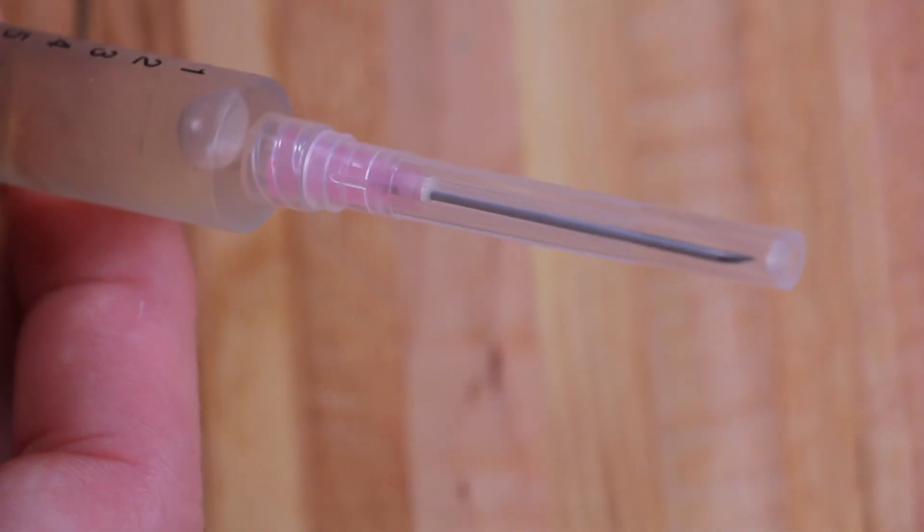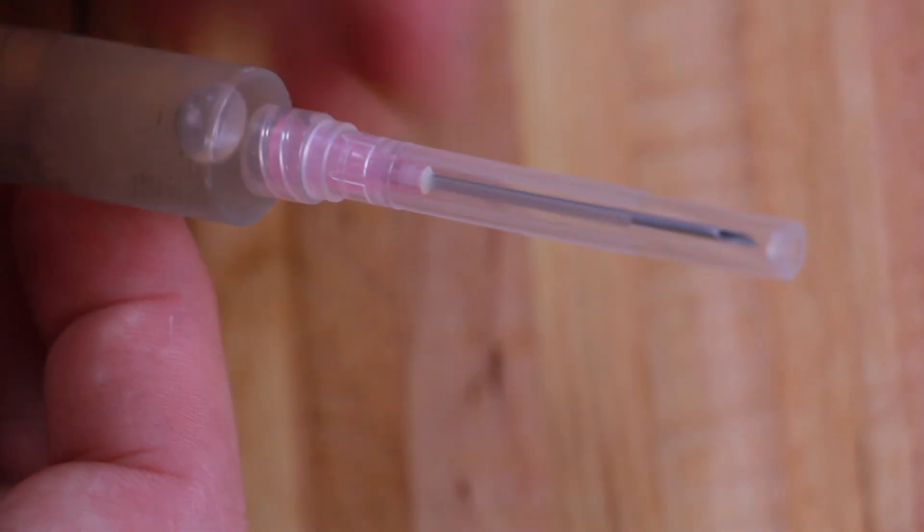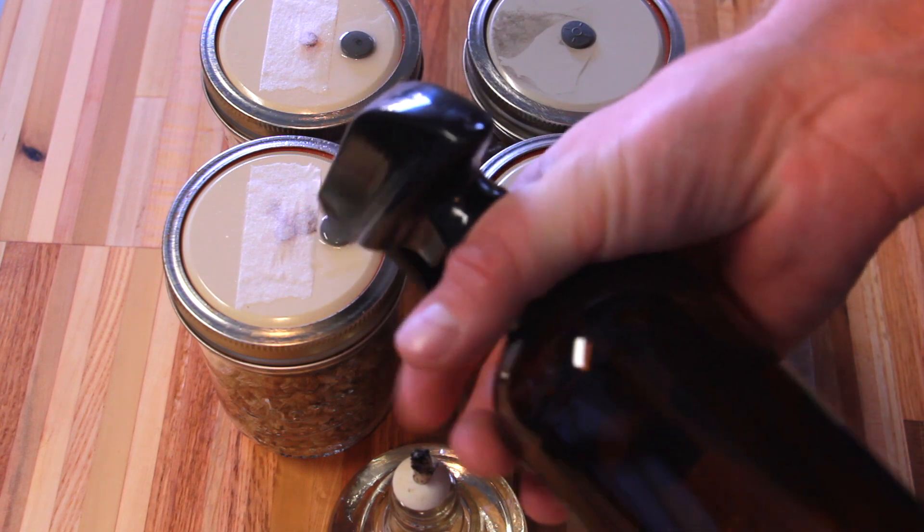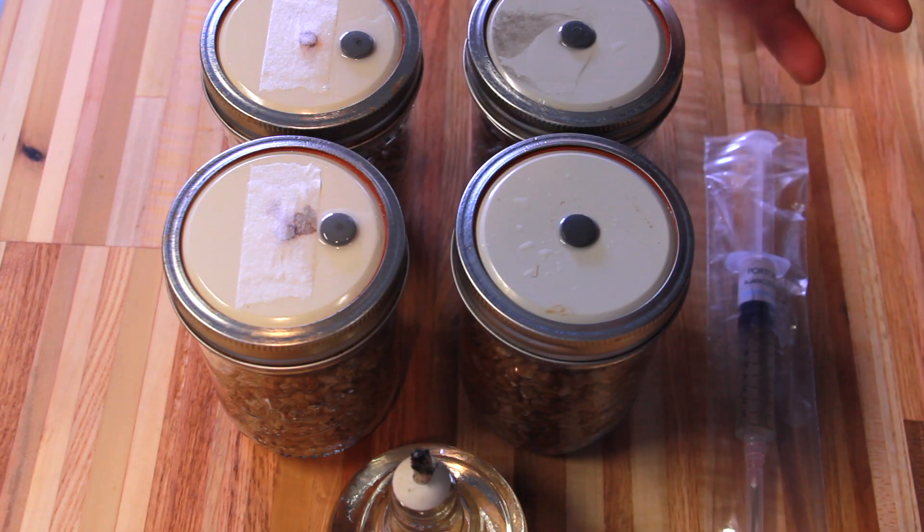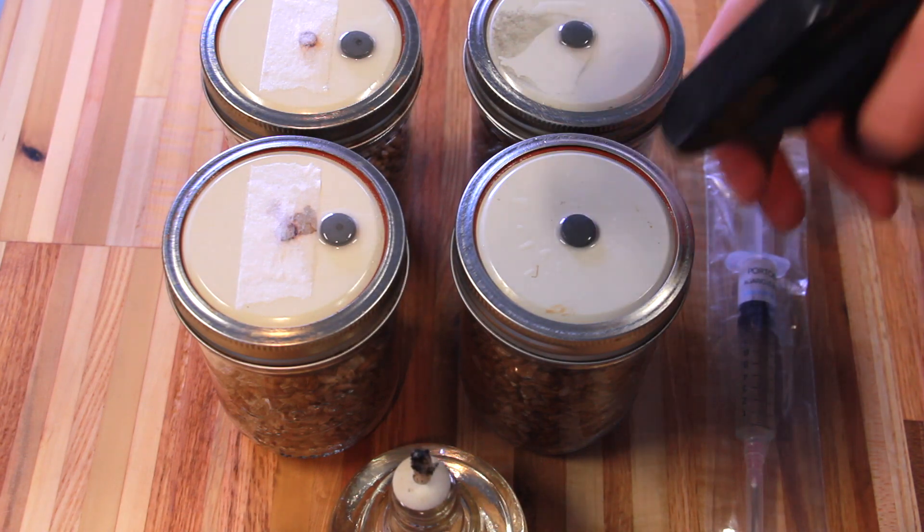I leave the cap installed until I'm ready to inoculate. I just give the rubber injection ports a quick squirt with some 70% isopropyl alcohol and that should be enough to kill off any major stuff that's on top.